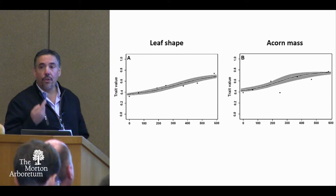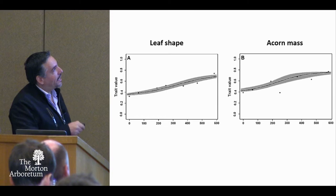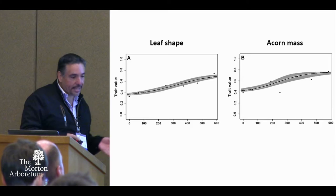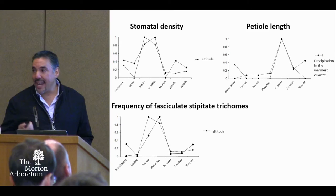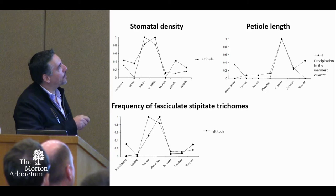However, when we look at other traits such as leaf shape or acorn mass, we don't see that very narrow cline. Instead we see a smooth, wider cline. These contrasting results indicate that maybe these traits are either plastic or not under strong negative selection, as we saw in the genetic data. But still other morphological traits show very different patterns of variation — not varying like a cline, but showing different kinds of patterns.